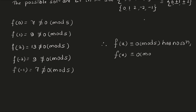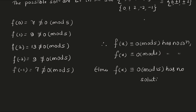As in the previous example, since f(x) ≡ 0 (mod 5) has no solution, and 3 is also included in that factor, f(x) ≡ 0 (mod 3) also has no solution. Hence the given polynomial f(x) ≡ 0 (mod 15) has no solution.